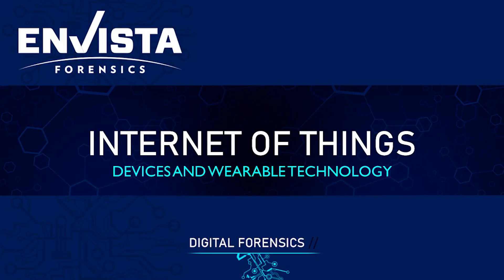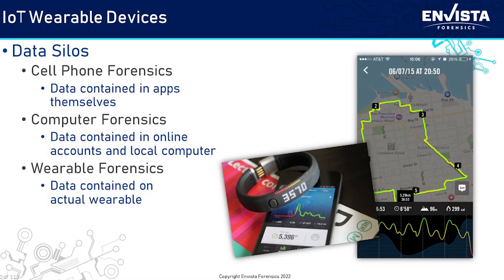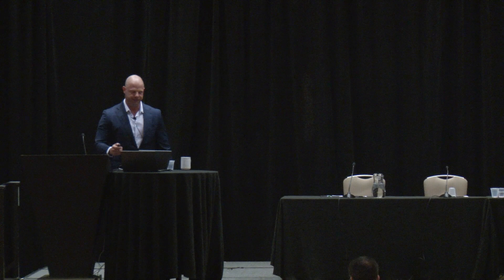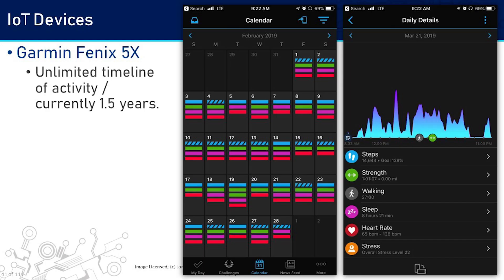We also have internet of things information — data coming from wearable technology devices. We have silos where data gets stored, whether that's your cell phone, applications, computers, or online accounts. Data from things like smartwatches and fitness wearables — an unlimited timeline of activity for a year and a half — includes workouts, sleep, nutrition through connected apps, heart rate variability, heart rate, and sleep scheduling. All of that information is available.